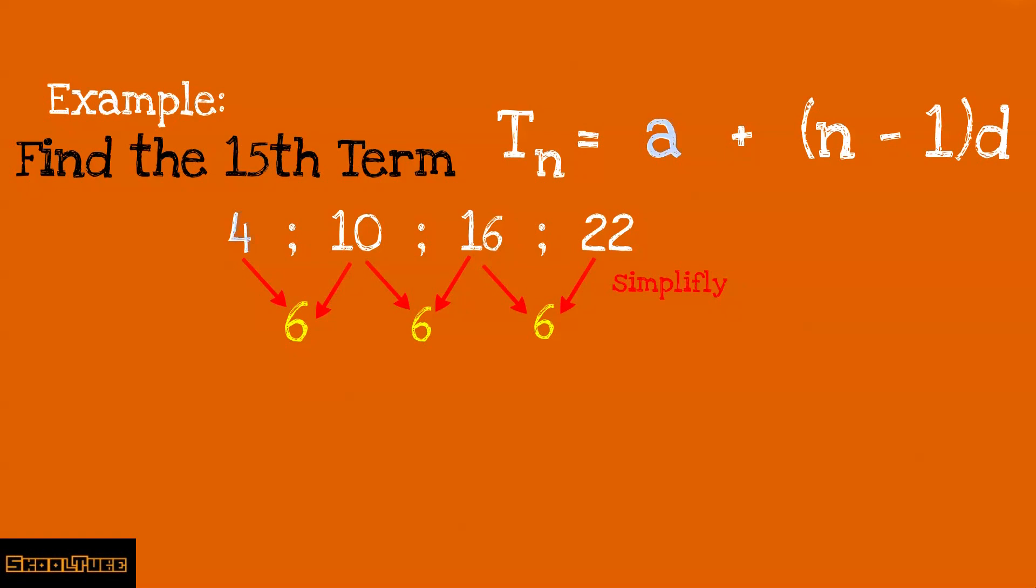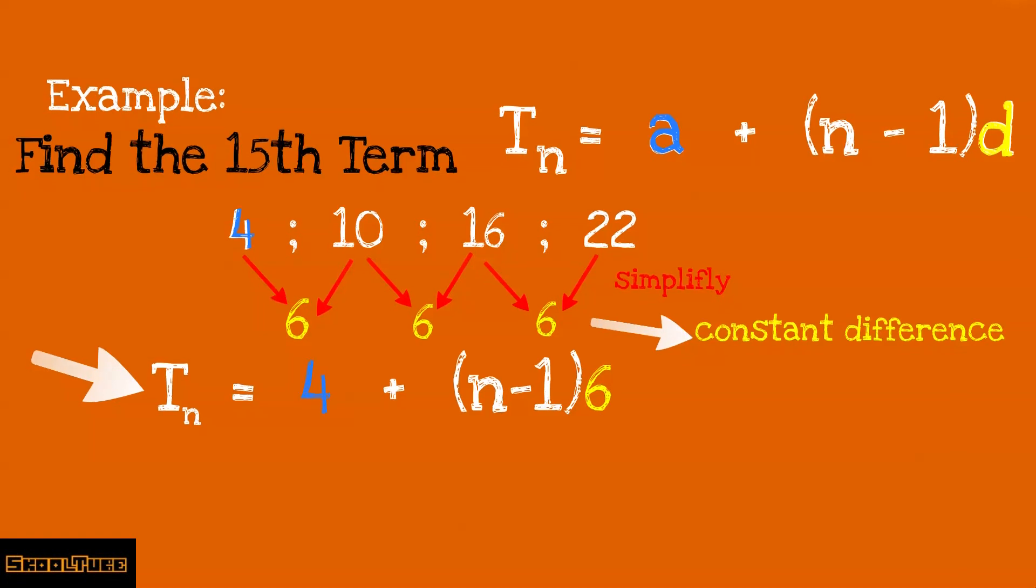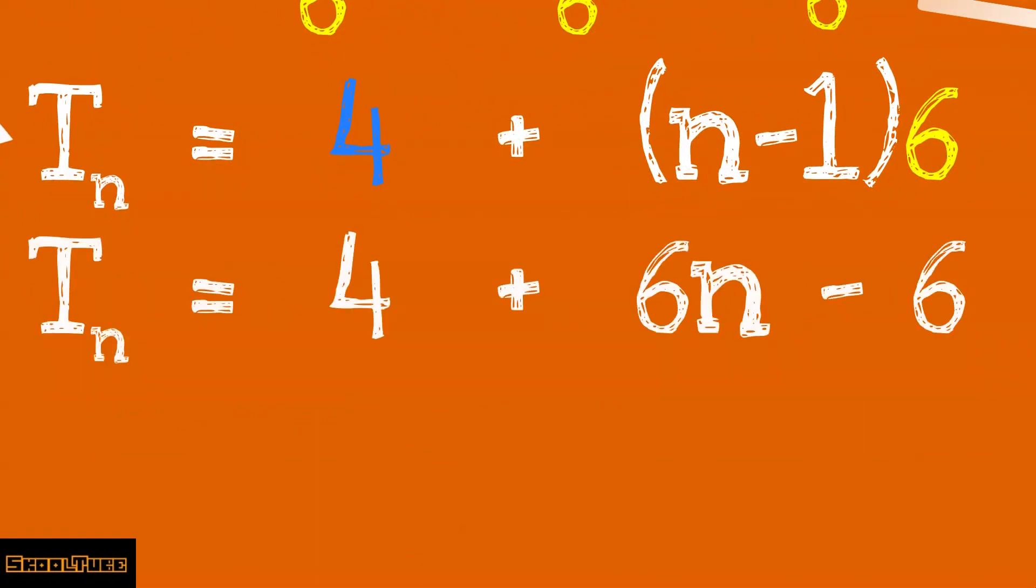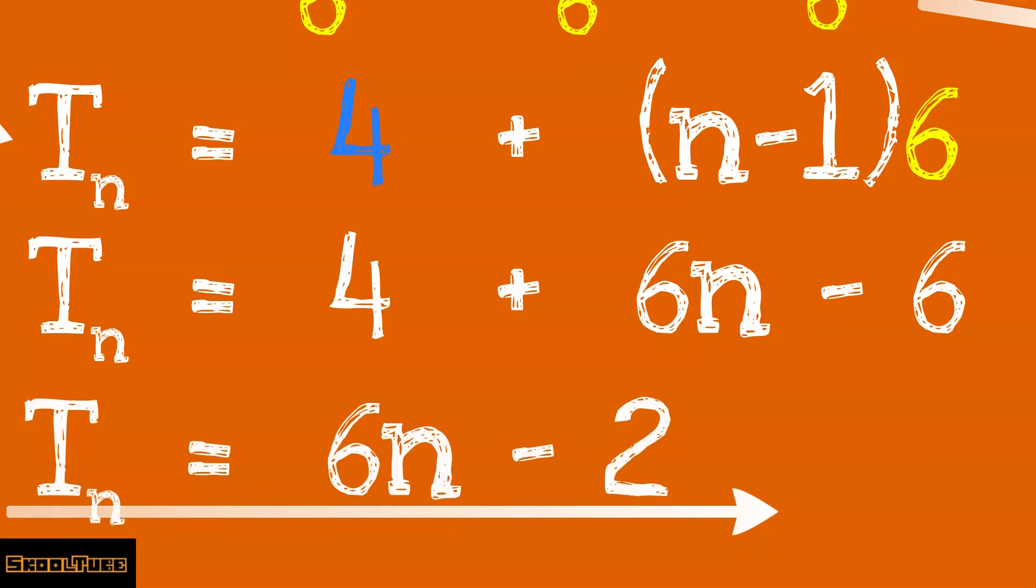We know that a is our first term, and in our sequence, a equals 4. d is our constant difference and we found d to be 6. So Tn equals 4 plus (n minus 1) times 6. When you simplify that, Tn equals 4 plus 6n minus 6. Simplify that even further and Tn will equal 6n minus 2.